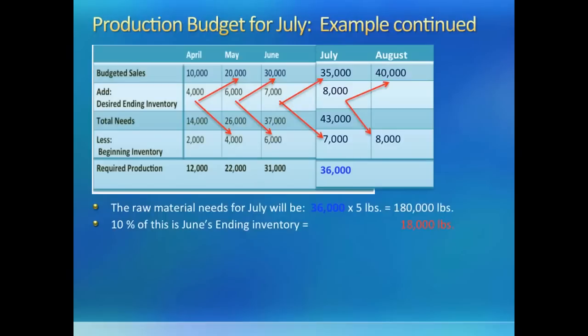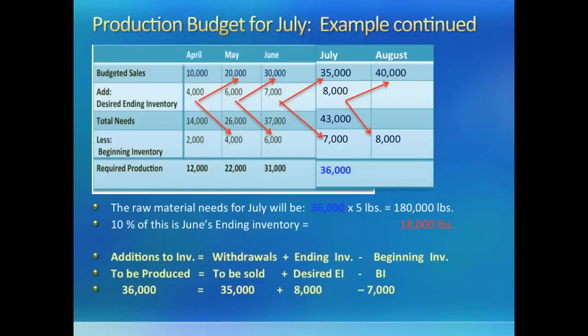8,000 in the July column is just 20% of August sales, and 7,000 in beginning inventory is the ending inventory of the last month. So in July we need to make 36,000 units. Since it takes 5 pounds of material to make 1 unit, total raw material needs for July would be 180,000 pounds. The company wants to keep 10% of this in its June inventory, so we get 18,000 by first making a budget for July production and then using it to extend our material budget to get the June ending inventory.